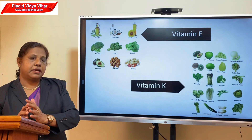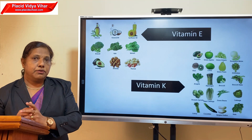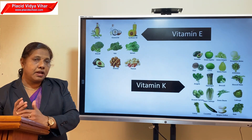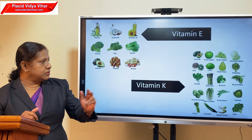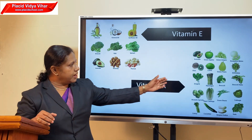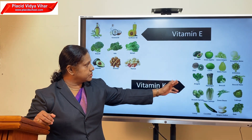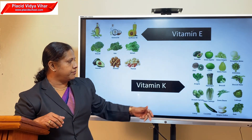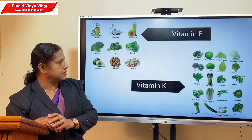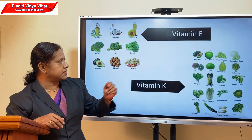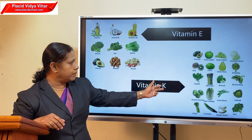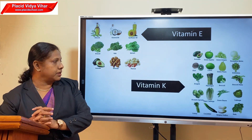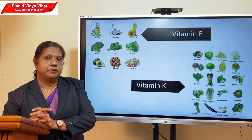Then vitamin K — what is the use of vitamin K in our body? It helps in the clotting of blood. We get it mainly from leafy vegetables, green grapes, green apples, avocado, and all these green leafy vegetables are rich in vitamin K.